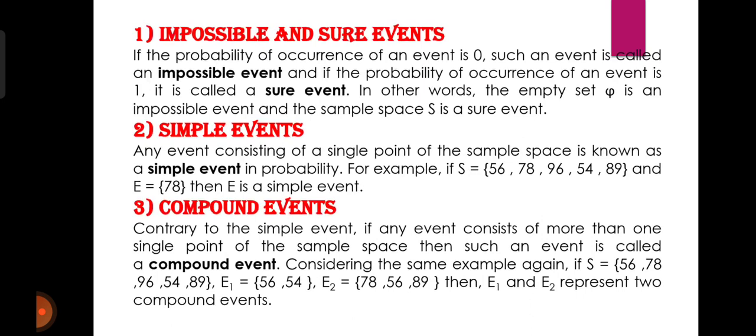About the first one — impossible and sure events. If the probability of occurrence of an event is 0, such an event is called an impossible event. And if the probability of occurrence of an event is 1, then it is called a sure event. यानि कि किसी event के occur होने की probability अगर 0 है तो वो होगी impossible event, और किसी के occur होने की probability अगर 1 है तो वो होगी sure event — वो surely occur होगी। Empty set को हम impossible event कहते हैं, और sample space S को हम sure event का नाम देते हैं।